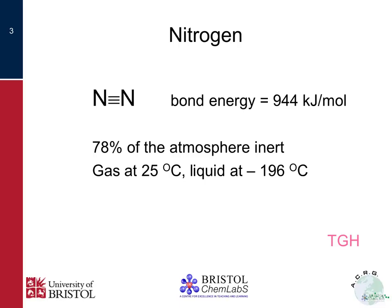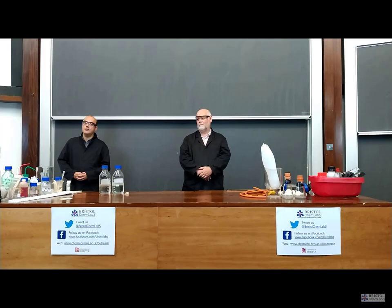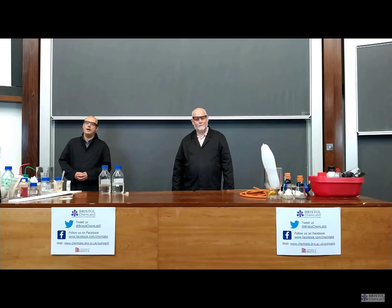Nitrogen is the most abundant gas in the atmosphere. Molecular nitrogen N2 is held together by a very strong triple bond, very hard to break apart. The bulk constituent - 78% of our atmosphere - is inert and at room temperature is a gas, and really quite boring. However, if you cool nitrogen down to minus 196 degrees centigrade, you turn it into a liquid, and then it gets a little bit more interesting.